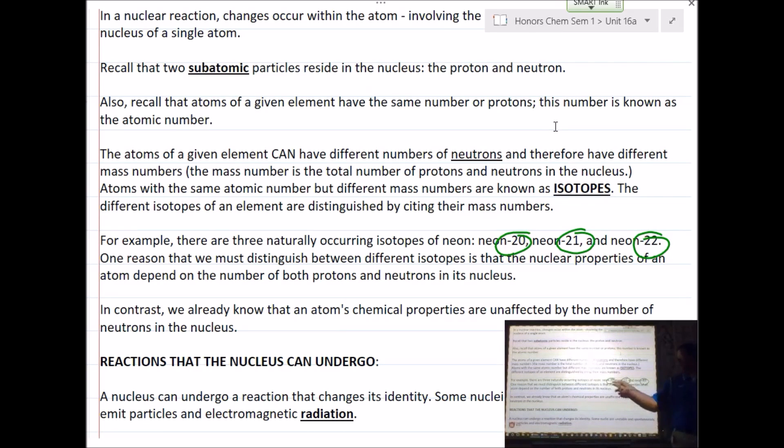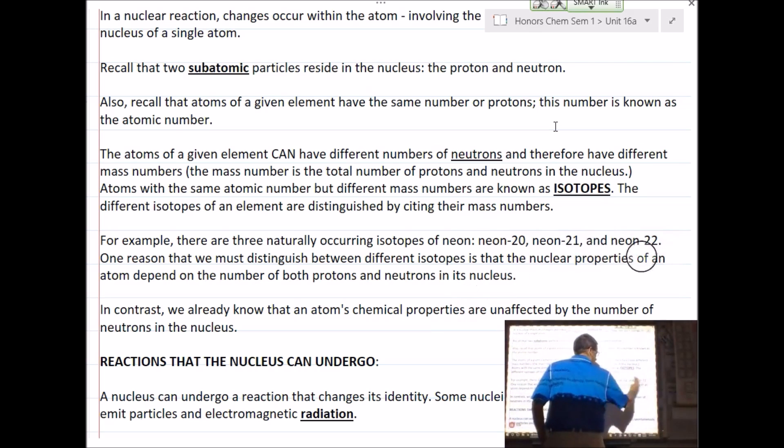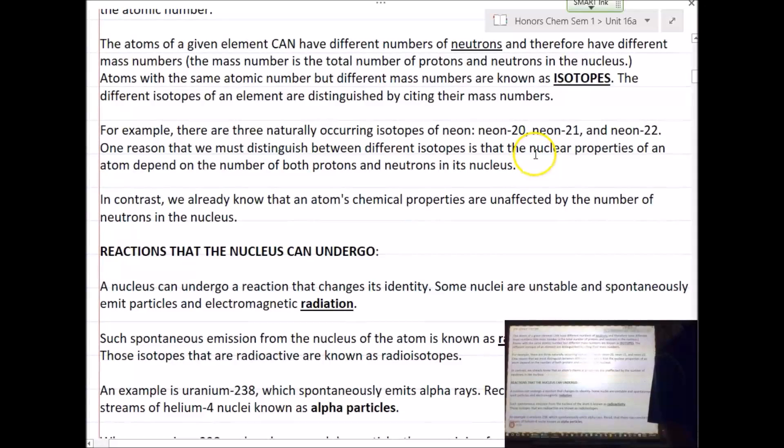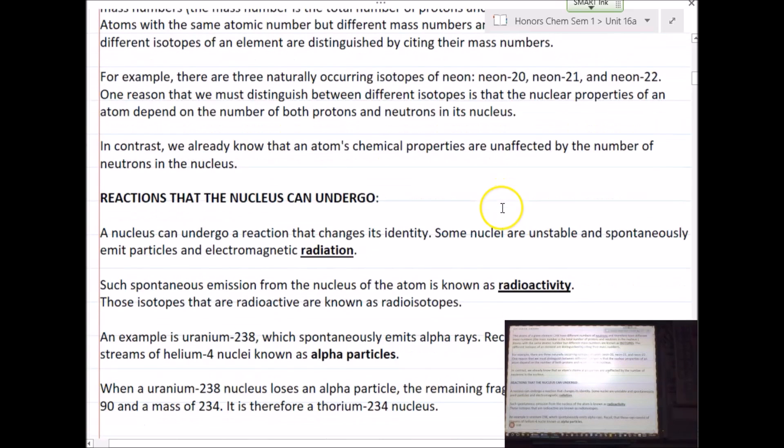If each of these neons have 10 protons, then how many neutrons does neon 20 have? 10. How many neutrons? 11 and 12. That's part of your homework for tonight. I know it's going to be extremely difficult. Also, in contrast, we already know that the atom's chemical properties are unaffected by the number of neutrons in the nucleus. So if you're looking at 20, 21, 22, it still behaves in the same way. Its melting point and freezing point might change a little bit, but the way it behaves is the same.